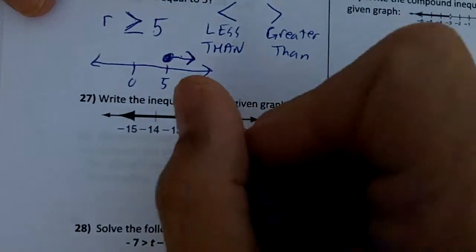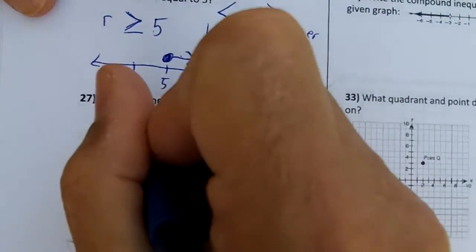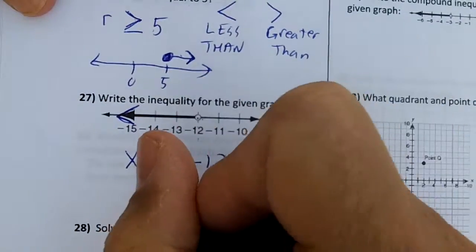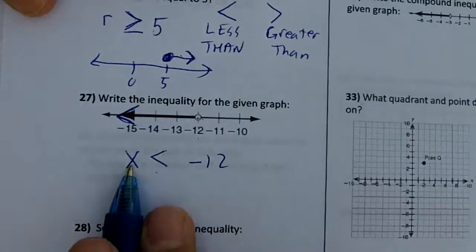On 27, the number's negative 12. Let's just use X. Our arrow tip is pointing to the left. The dot's open so we don't have an equal bar. That's all you have to do on that problem. Make sure your variable's on the left.